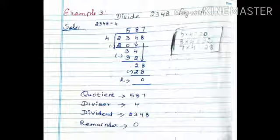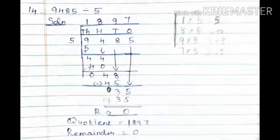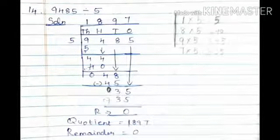Okay students, this is based on the exercise sums next. Page number 62 will have all the exercise sums. 14th sum, 9485 divide 5. We have a 4 digits number.